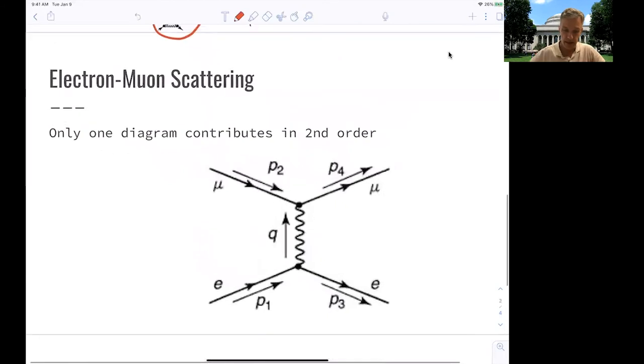So let's have a look at this electron-muon scattering process. Only one diagram contributes at second order. And so we have an electron and a muon scattering via the exchange of a photon. This is, after all, a QED diagram.